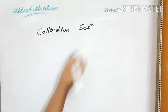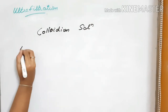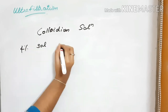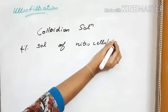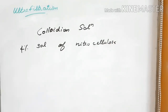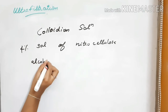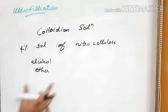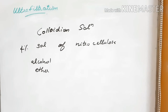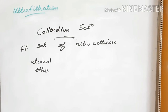The collodion solution is a 4% solution of nitrocellulose in a mixture of alcohol and ether. Ultra filter paper allows electrolyte particles, present as impurities, to pass through, but does not allow colloidal particles to pass.